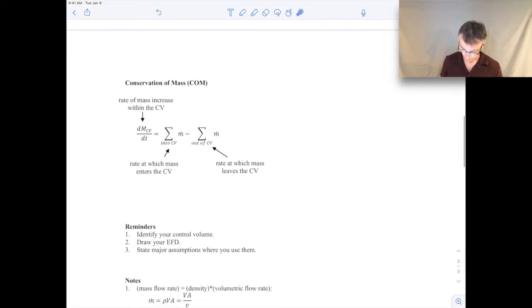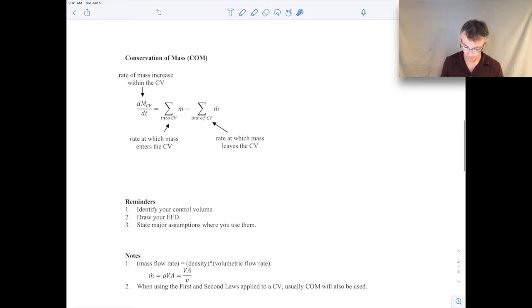So first of all, the abbreviation I'm going to use for conservation of mass is COM, so you'll see that pretty often. And the conservation of mass for a system, well that one's pretty easy. Let me just write that down here. Conservation of mass for a system is just mass of a system is a constant. That's pretty straightforward. It doesn't get much easier than that. I think you're all probably comfortable with that idea.